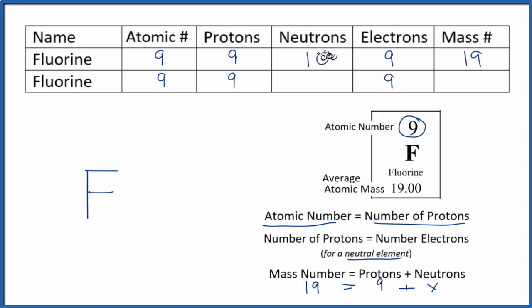10 neutrons for this isotope of fluorine. And we call it fluorine-19. We base the name on the mass number. So we have fluorine-19, and almost all of the fluorine that we find in nature is going to be 19.